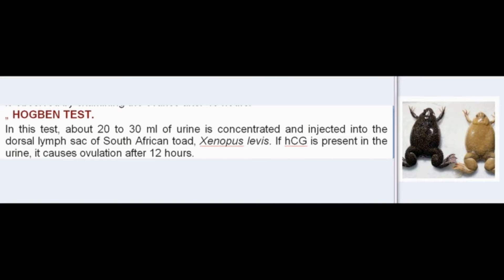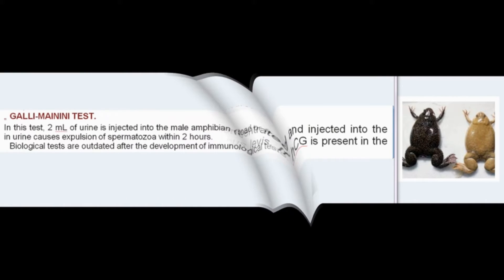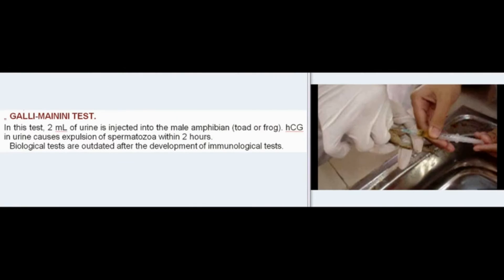In the Hogben test, about 20 to 30 ml of urine is concentrated and injected into the dorsal lymph sac of the South African toad, Xenopus laevis. If HCG is present in the urine, it causes ovulation after 12 hours.